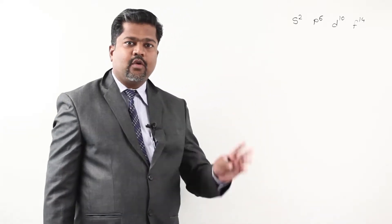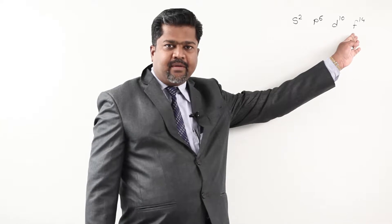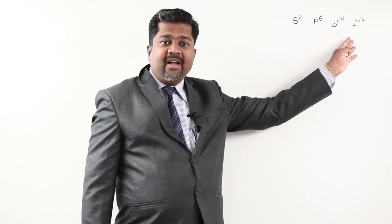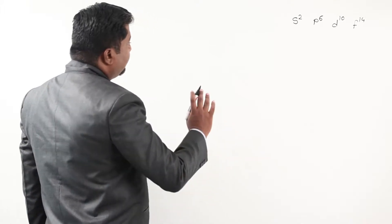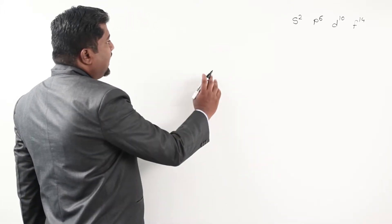That means I can accommodate 14 electrons in F, but not a 15th electron. I can accommodate 13, 12, 11, 10 — any number up to the maximum. Now I am constructing a chart.